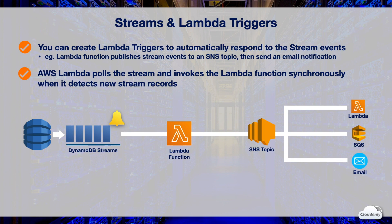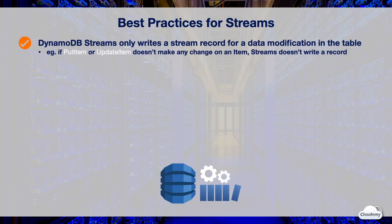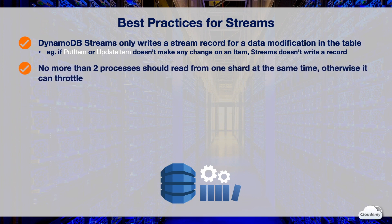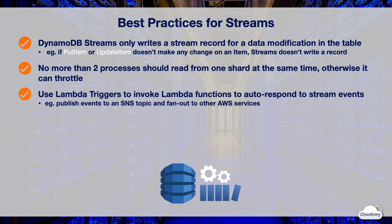With streams and Lambda triggers, you can build complex workflows to automatically respond to certain stream events. Note that DynamoDB Streams only writes a stream record for an actual data modification — if a Put Item or Update Item request doesn't modify the item, no stream record is created. As a best practice, no more than two processes should read from one shard at the same time, as more than two readers per shard may result in throttling. When there are higher write activities, DynamoDB Streams might split shards to allow the application to process different shards in parallel.